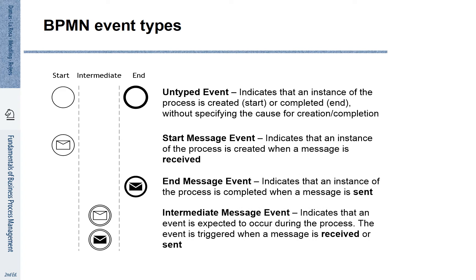You can also indicate so-called intermediate events. Intermediate events have double lines. We also see that different types of end events are possible, shown with solid lines. What also catches our attention is that we have events with a white envelope and a black envelope. The white envelope events indicate that we are waiting for some information to be received. The filled black envelopes indicate that we provide information to external parties.